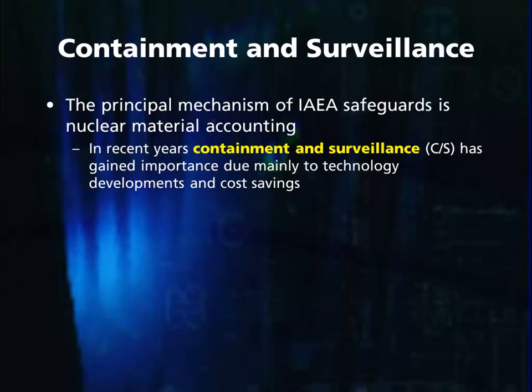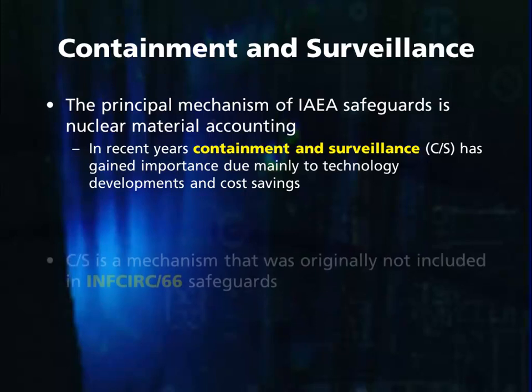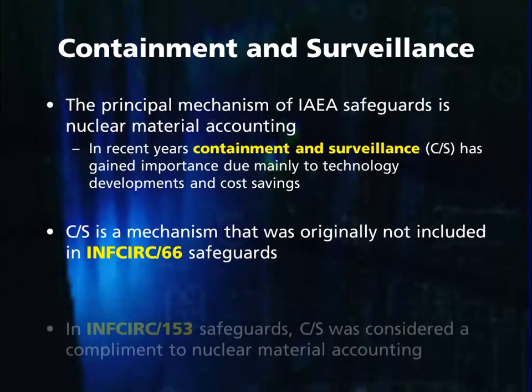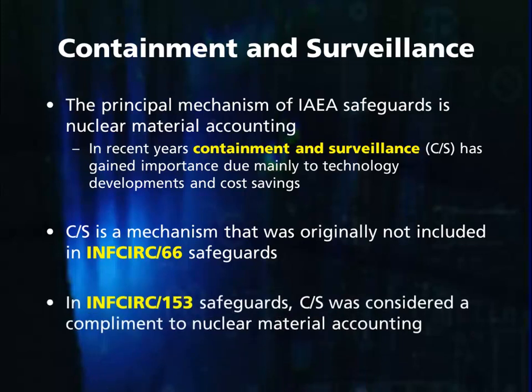In 1965, when Information Circular 66 was released, containment and surveillance was not a mechanism originally included. However, when the IAEA began development of the next round of safeguards requirements, the IAEA chose to focus on containment and surveillance as a complement to nuclear material accounting. So, in INFCIRC/153, containment and surveillance can be seen as a complement to nuclear material accounting.